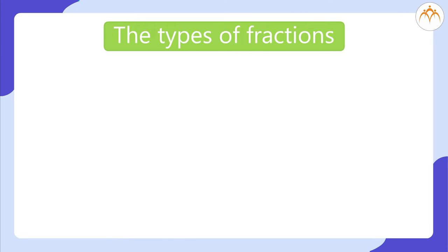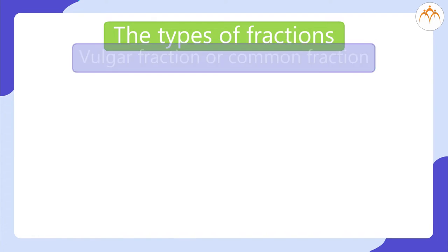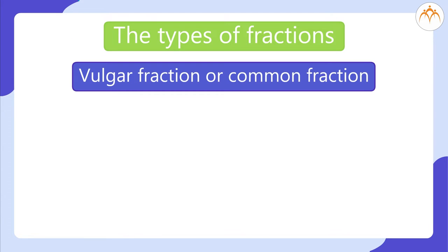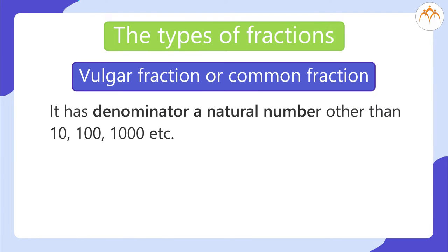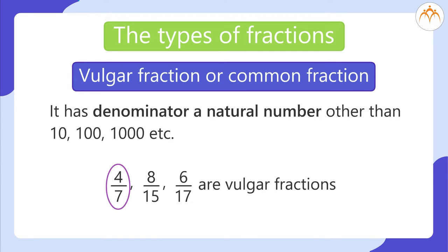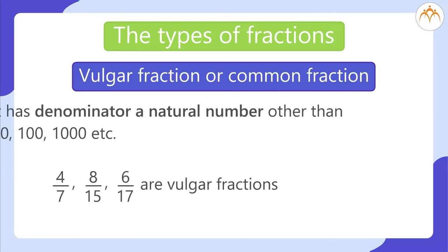The types of fractions. Vulgar fraction or common fraction: it has a denominator that is a natural number other than 10, 100, 1000, etc. For example, 4 divided by 7, 8 divided by 15, and 6 divided by 17 are vulgar fractions.